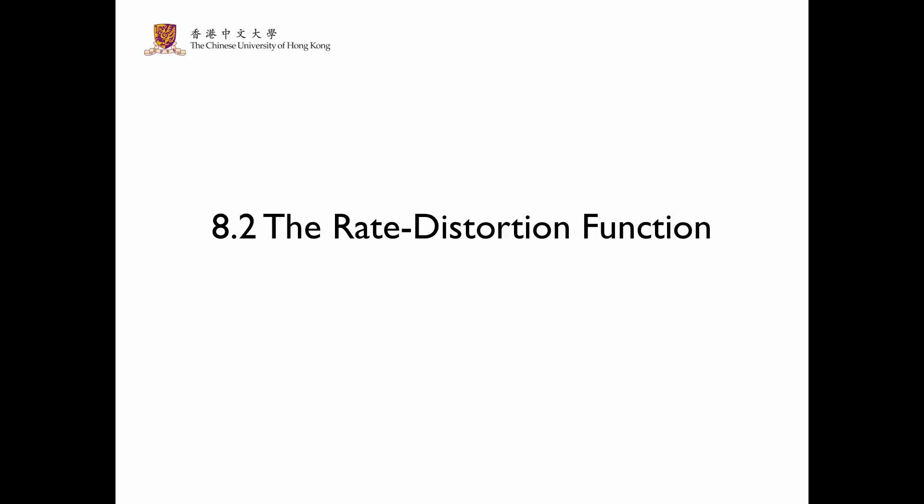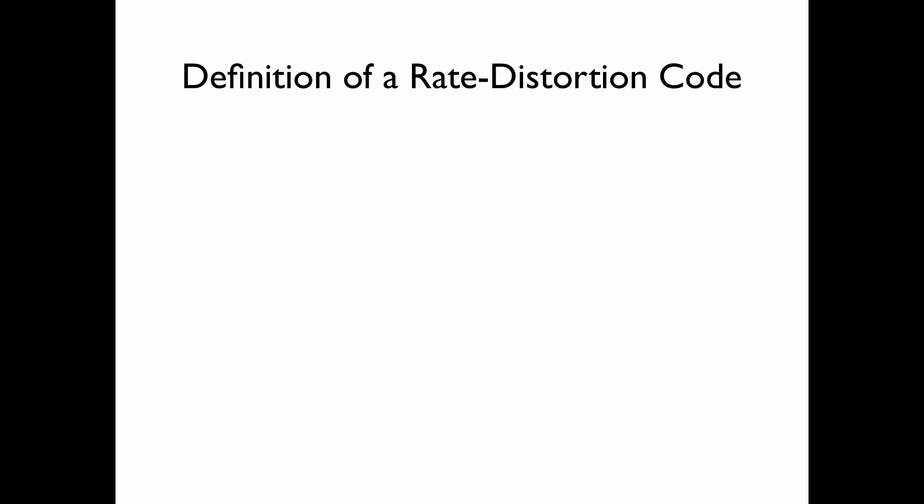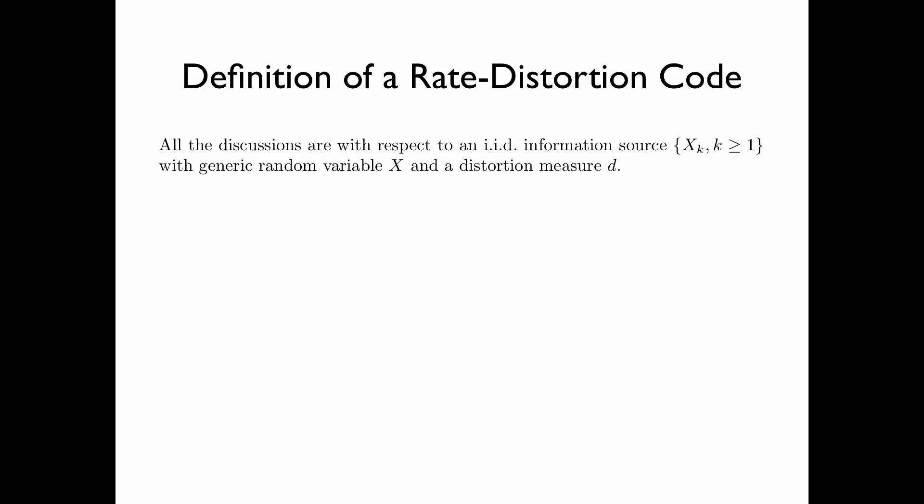In section 8.2, we introduce the rate-distortion function. We first define a rate-distortion code. All the discussions are with respect to an IID information source x sub k, k greater than or equal to 1, with generic random variable x, and a distortion measure d.